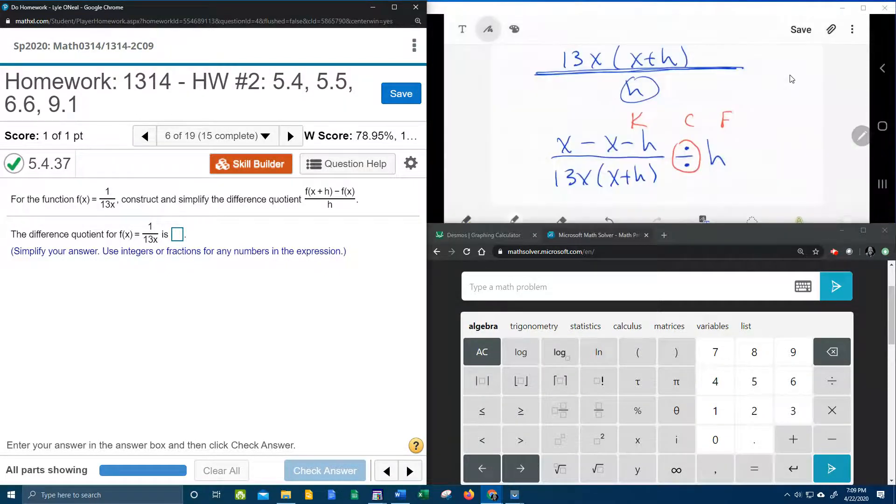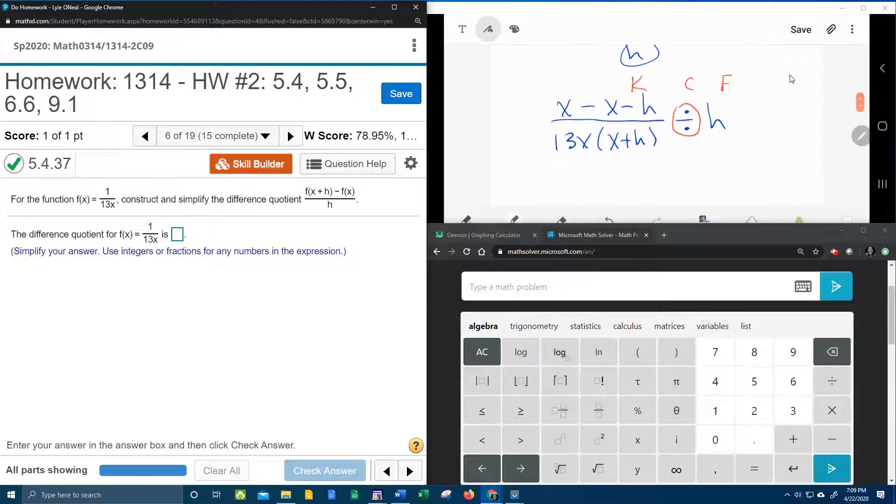That's the keep, change, flip. So we're going to keep the first fraction the way it is, we're going to change division to multiplication, and we're going to take the h and flip it.